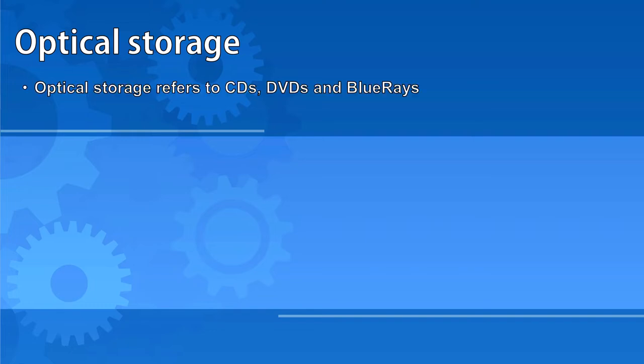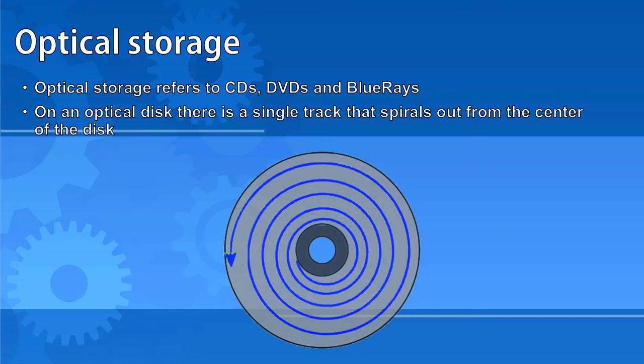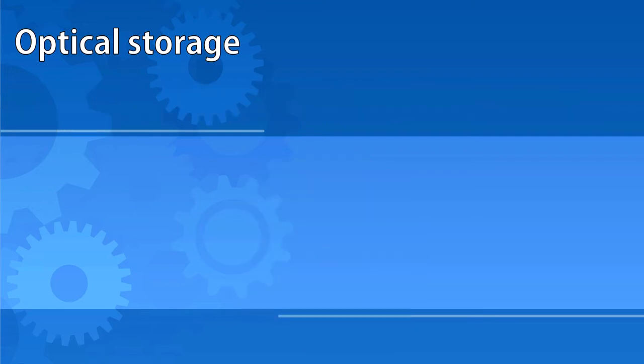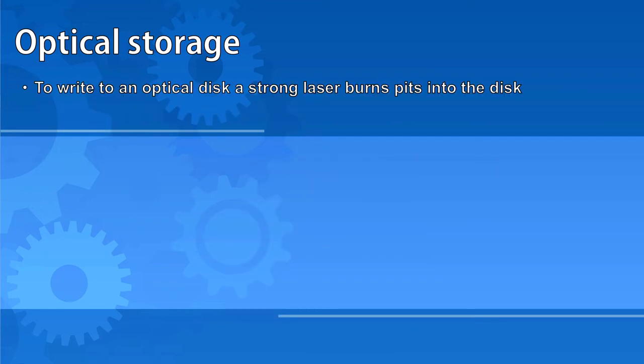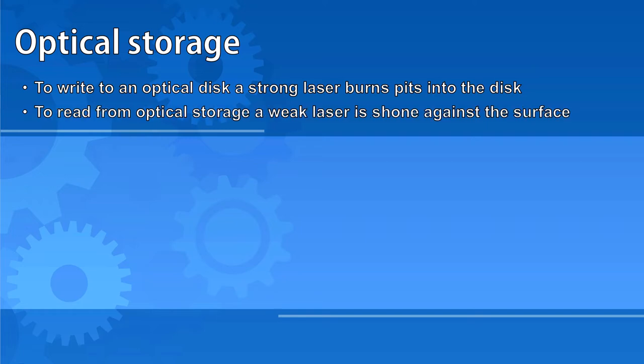Optical storage refers to CDs, DVDs, and Blu-ray discs. Each of these has a single track that spirals out from the centre of the disc. To write to optical storage, a strong laser burns holes known as pits into the disc. To read from optical storage, a weak laser is shone against the surface.